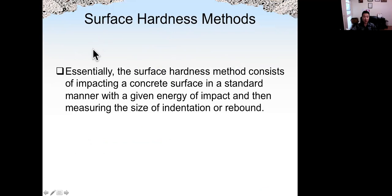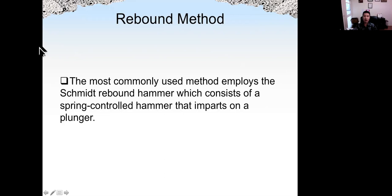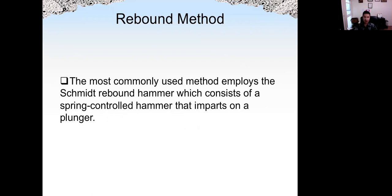The first one we're going to discuss is the surface hardness measure. The surface hardness measure consists of impacting the concrete surface in a standard manner with the rebound hammer. The rebound hammer is the most commonly used measure to check the strength development of concrete. It has another name — it's called the Schmidt rebound hammer. Inside the hammer, it has a spring-controlled hammer that imparts on the plunger.